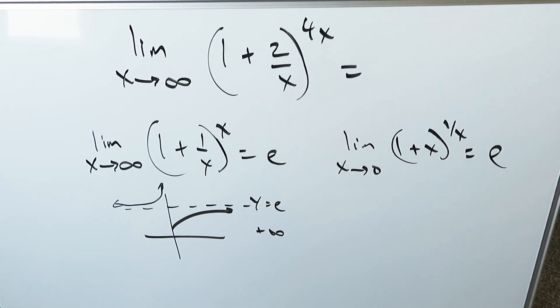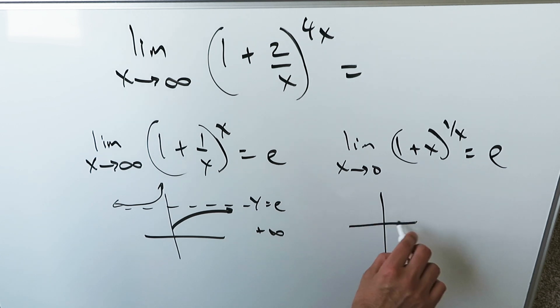These are your two limits which will always give you e. When you are graphing this one right over here, you're looking at a function which looks like this. At 0 approaching from the right, 0 approaching from the left, this intercept here is e.